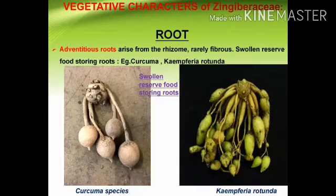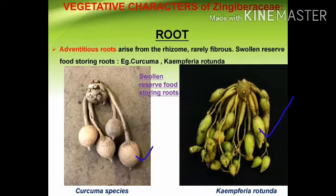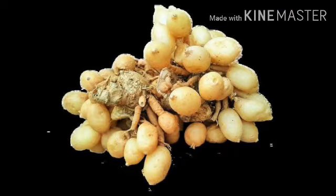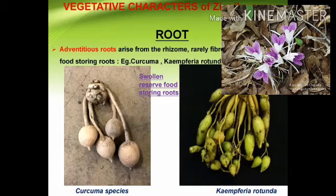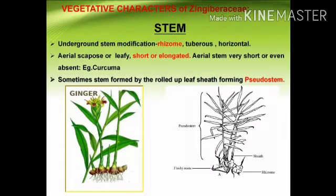In some cases the root tips are swollen due to the presence of reserve food materials. Examples are Curcuma amada, which is the mango ginger, and Kaempferia rotunda, called the Indian crocus. The stem consists of underground stem and also aerial stems. The aerial stems are very short and reduced, and the underground stems are the rhizomes.